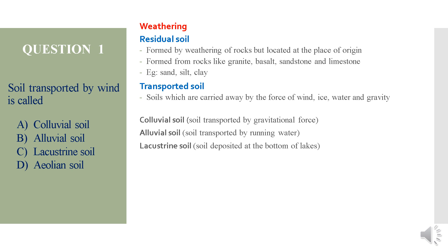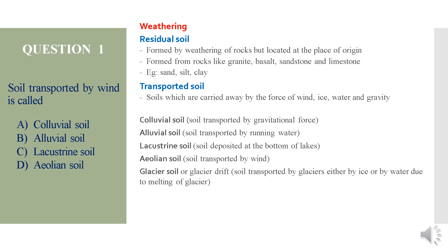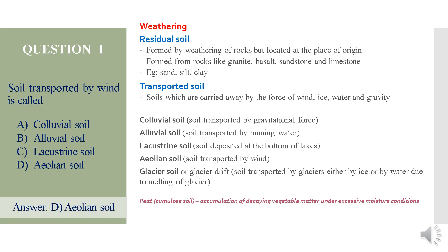Glacial soil, or glacial drift, is transported by glaciers — either by the ice itself or by water formed from melting glaciers. Accumulation of decaying vegetable matter under moisture conditions may cause the formation of peat, a cumulus soil. So the answer for 'soil transported by wind is called' is option D: aeolian soil.